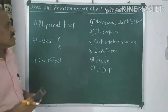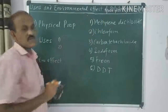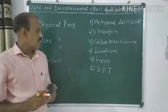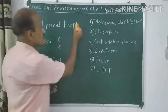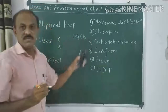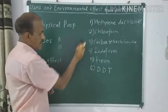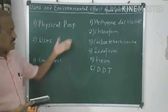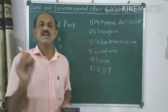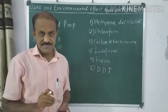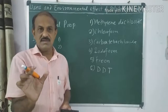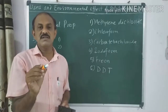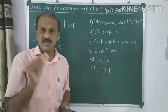Let us start with the first polyhalogen compound, that is methylene dichloride. Methylene dichloride is a polyhalogen compound because it has the formula CH₂Cl₂. Regarding its physical properties, it is a colorless volatile liquid which has a sweet smell. So it has no color, it is volatile in nature, and it has a sweet smell.